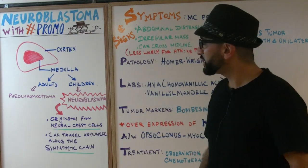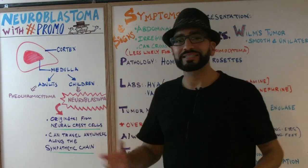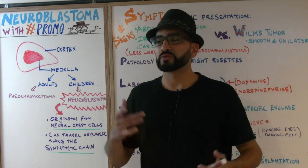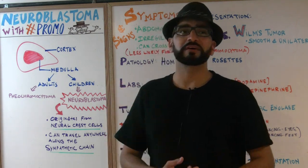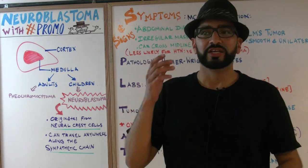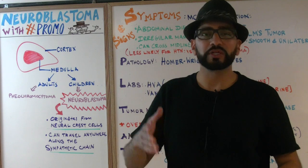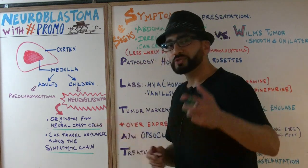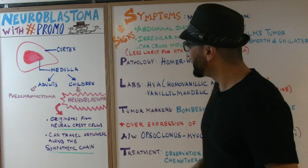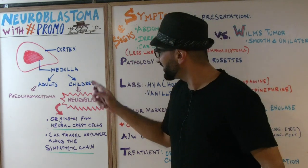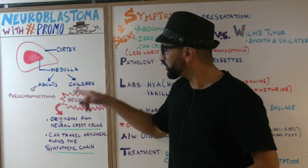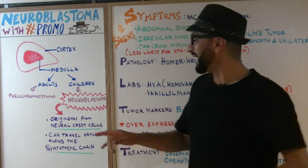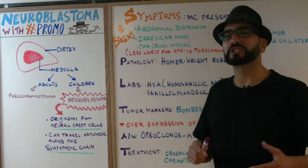So what do you need to know about neuroblastoma? This is easy information — memorize these facts and you'll do really well on your US or Canadian board exams. Neuroblastoma originates from the neural crest cells and can travel anywhere along the sympathetic chain.